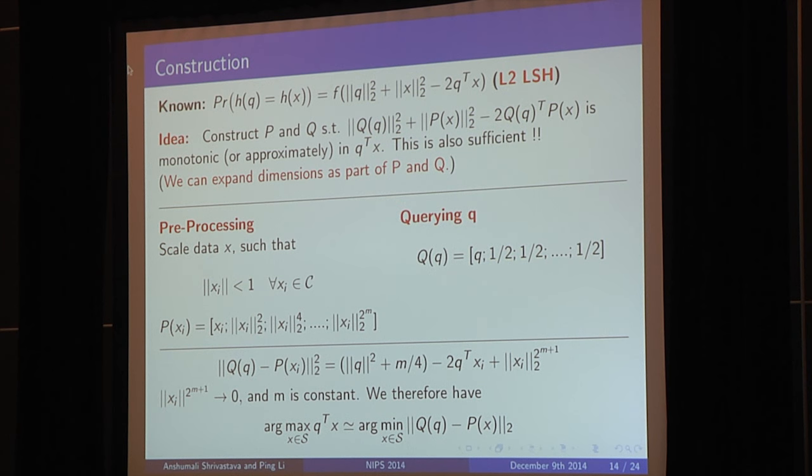Now once you have done that, what you do is you simply append few more scalars to your vector. So for p of xi, you just append a few terms like norm of xi square, norm of xi to the power 4 up to norm of xi to the power 2 to the power m. Some m scalars to your vector. Now that's your p transformation. And for the query, you simply append m halves. Now it's a two line exercise to show that the L2 norm of q of q and p of xi is the expression shown on the right hand side. In that expression, I like q transpose x because that's what I want. m by 4 doesn't hurt me. The norm of query also doesn't hurt me for the ordering, but we can get rid of it. And the only problematic term could be the norm of xi to the power 2 to the power m plus 1. But I have shrinked the norm to be less than 1. So this term actually goes to 0 at a tower rate, which is exponential raised to exponential. And so what is happening is the ordering under the L2 distance of the asymmetrically transformed q and p is same as the ordering of inner product. And that is essentially the whole idea.